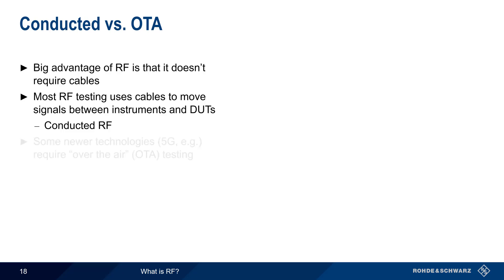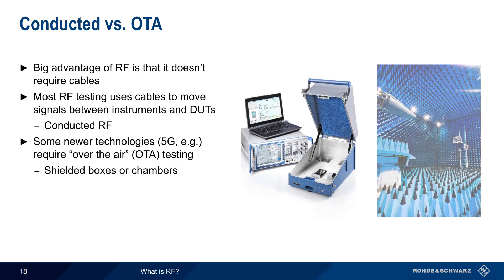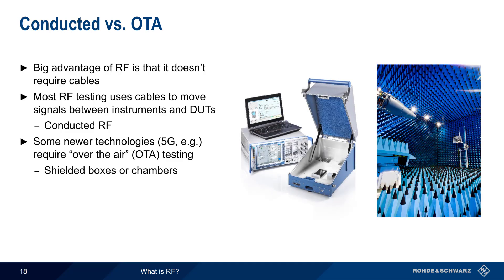However, some of the more recent technologies, such as 5G, require so-called over-the-air, or OTA testing, where signals are radiated into and or out of the device under test. This is mostly due to the higher frequencies used in these technologies, and the lack of an RF connector on the DUT. In this case, testing usually requires special shielded boxes or chambers in order to keep other RF signals from getting in, and prevents our test signals from radiating out.